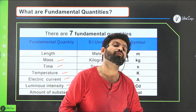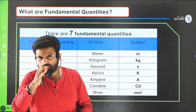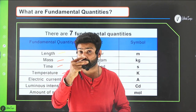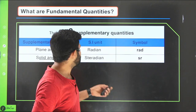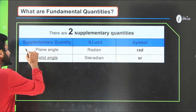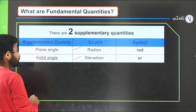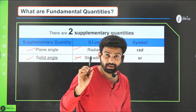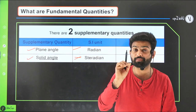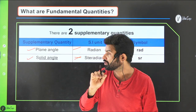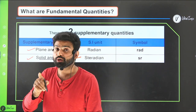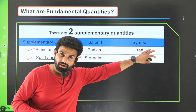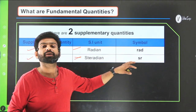These seven fundamental quantities have both units and dimensions. There are also two supplementary quantities: radian and steradian. Radian is used for plane angle and steradian is used for solid angle. We call them supplementary quantities because they have units but do not have dimensions.